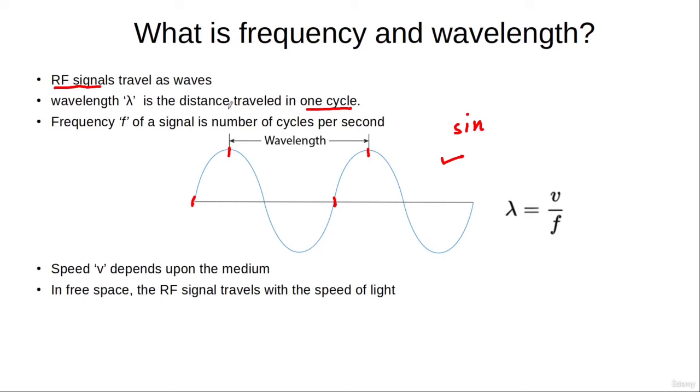Now the distance that is traveled by a wave during one cycle is called the wavelength, and it is denoted by lambda. And the number of cycles that are traveled by a wave during a second is called the frequency f. So number of cycles per second of a wave is called its frequency.